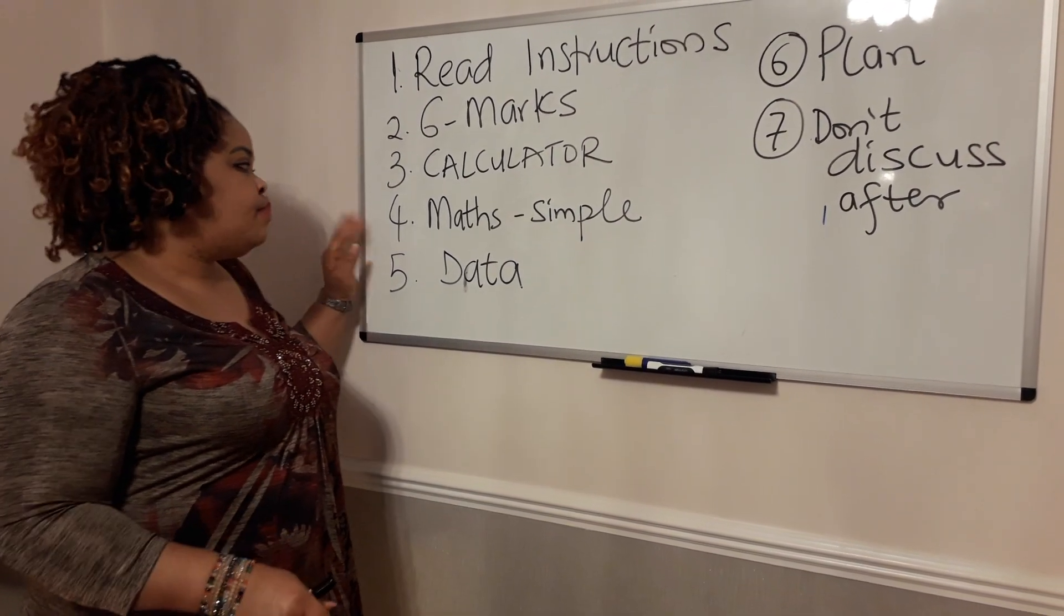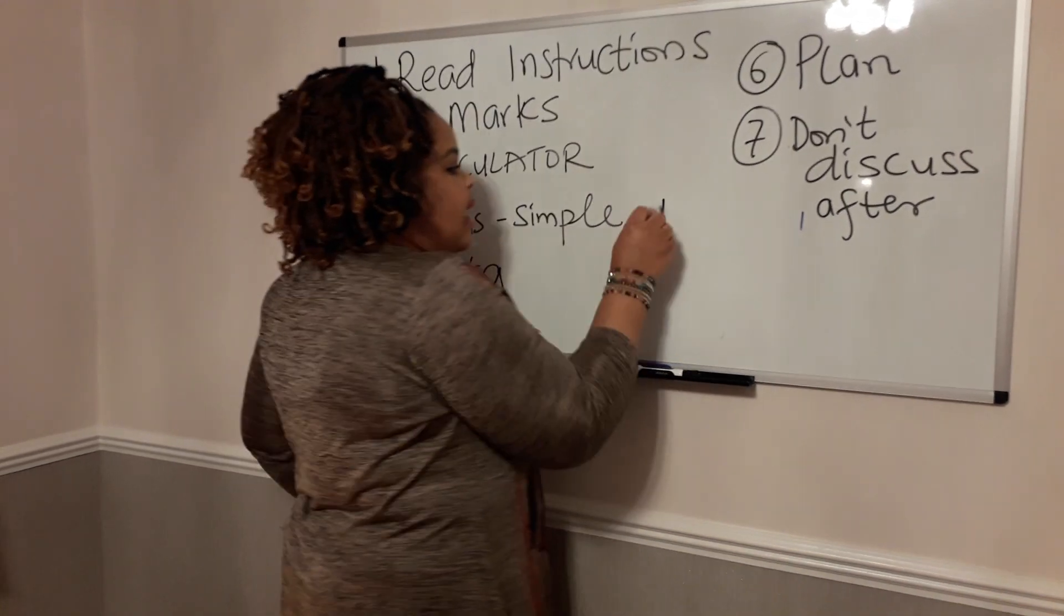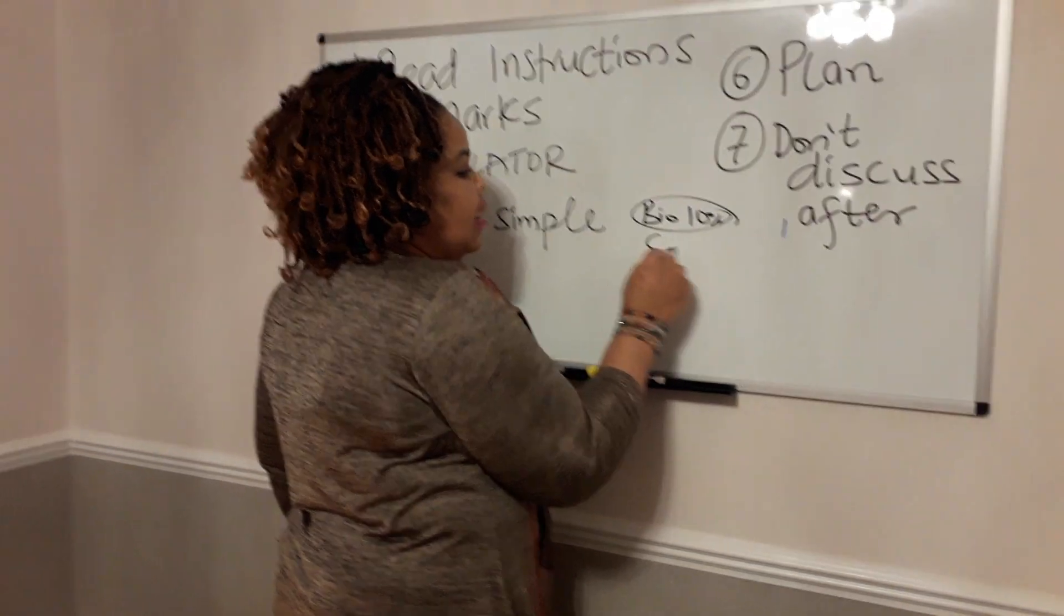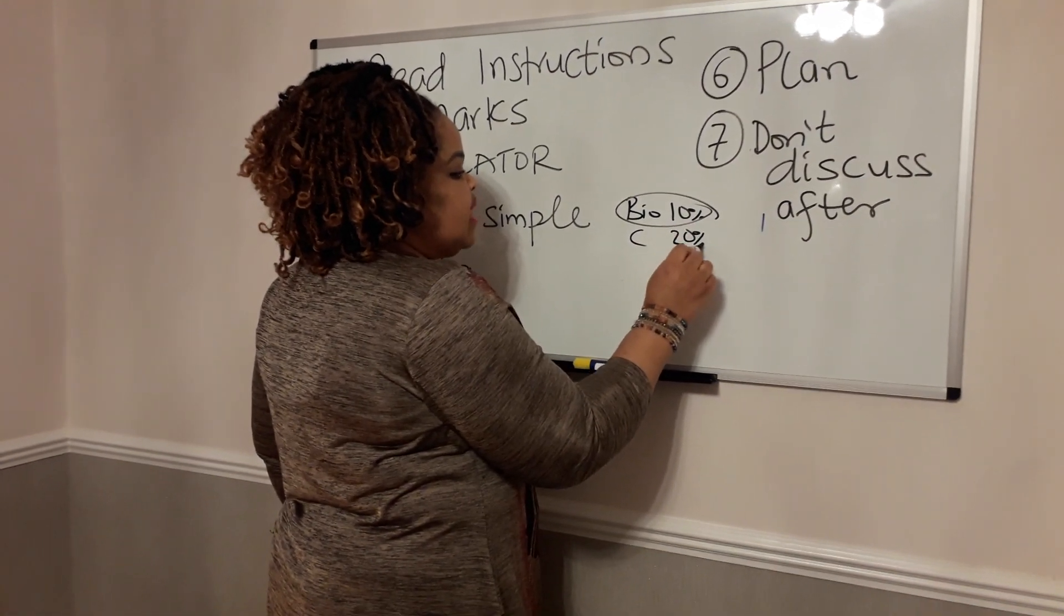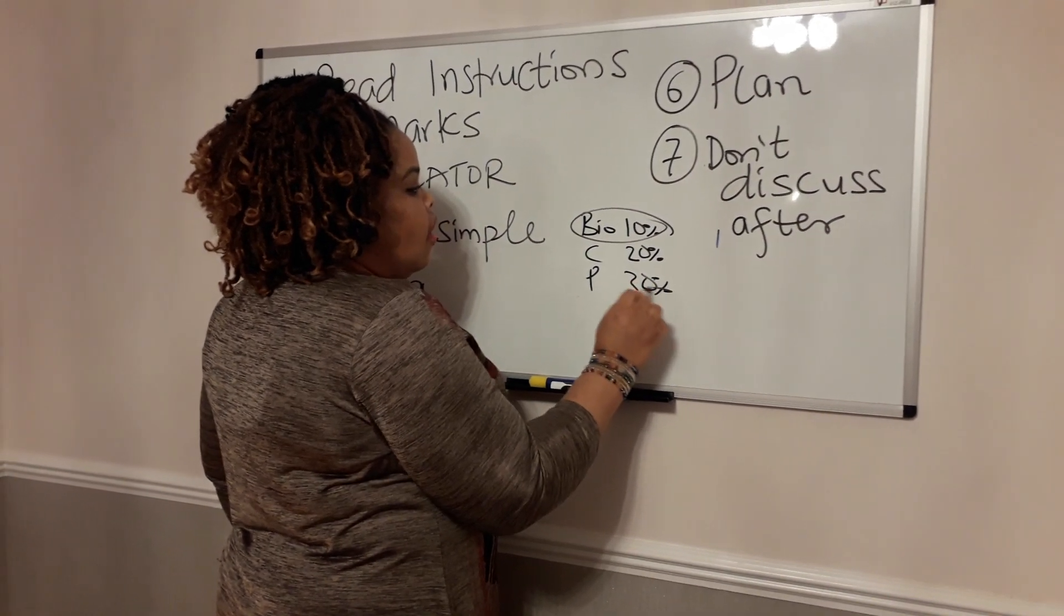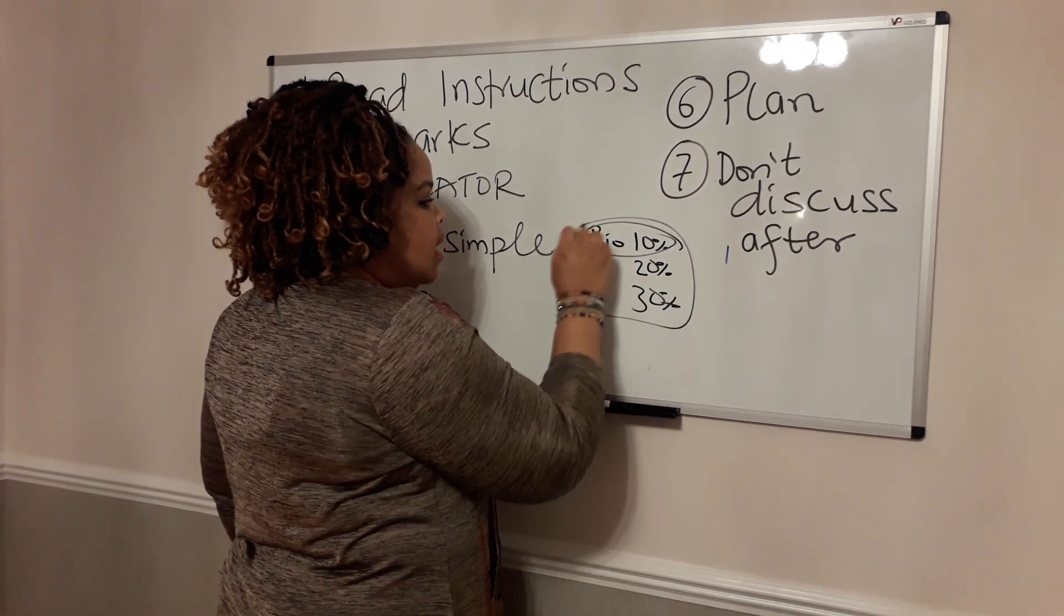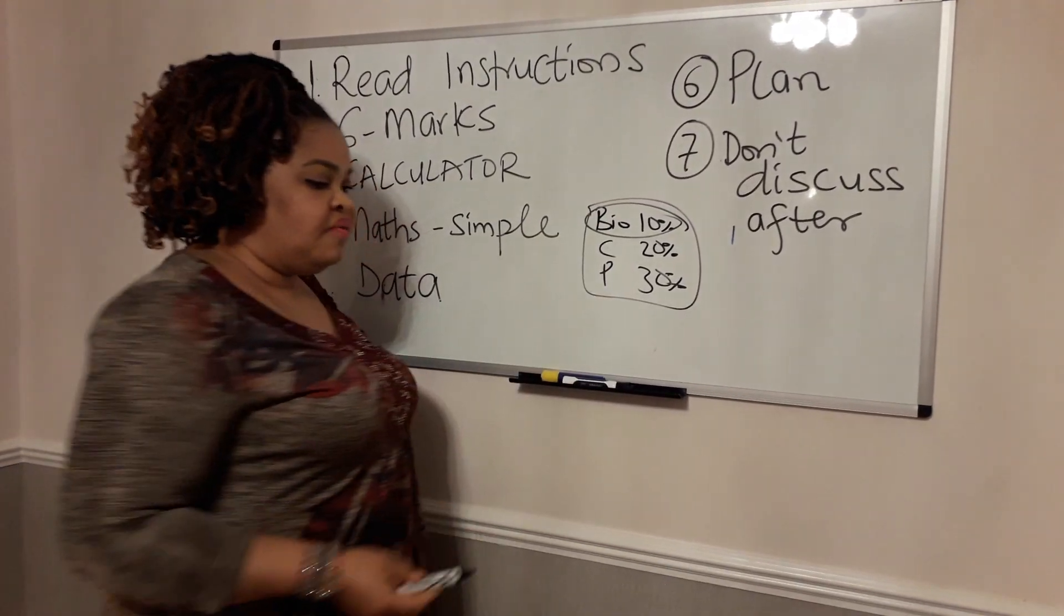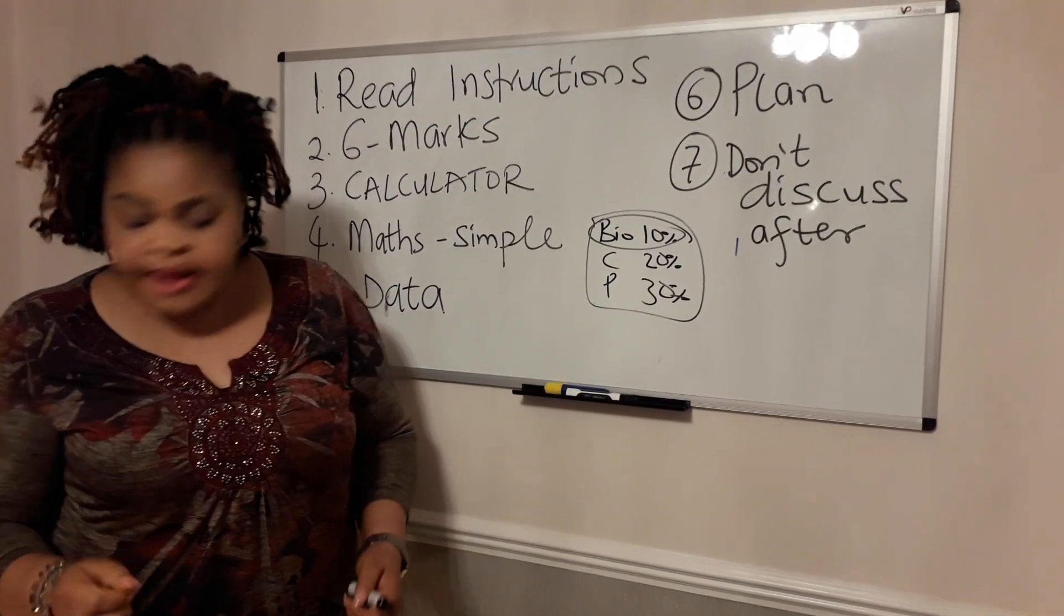The maths you have on the biology, physics and chemistry paper is so easy you don't want to miss any of those maths. By the way, on the biology paper you have 10% of the questions in maths, and chemistry is 20%, and physics is 30% of the questions in science. You don't want to lose all of that. You want to actually gain all of that because it's really easy.